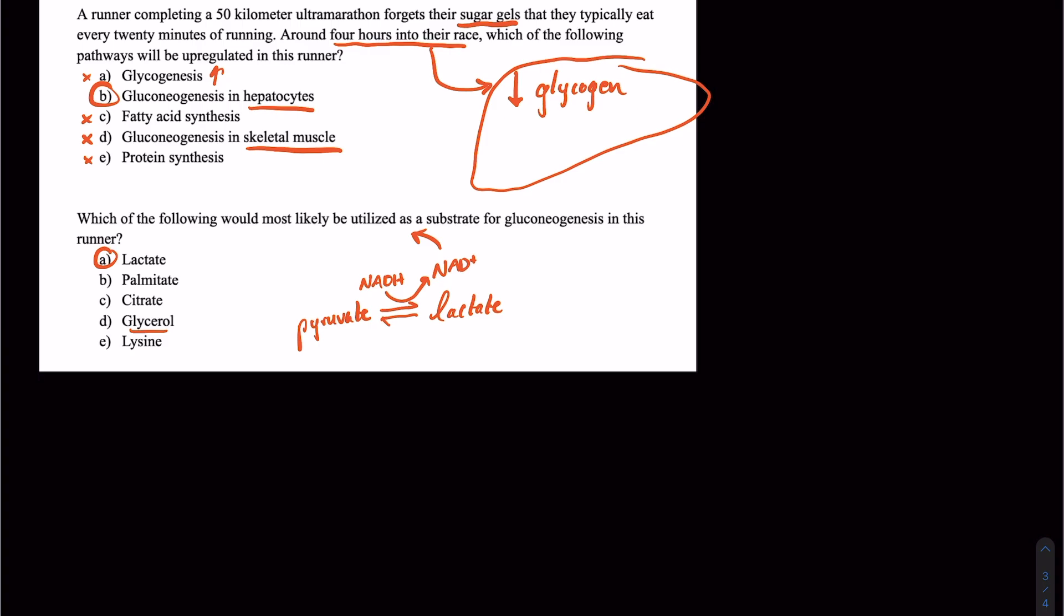Palmitate, that's a 16-carbon fatty acid that's going to be used primarily when we're thinking about the process of fatty acid synthesis. That's going to be our end product, and it's going to be eventually incorporated into triglycerides.